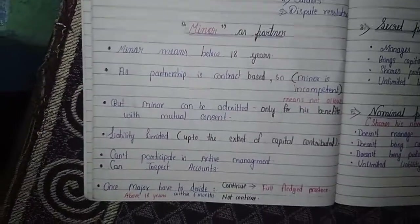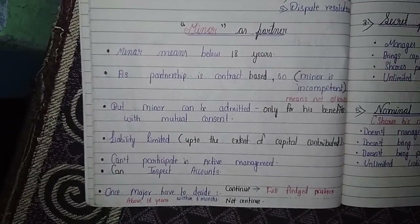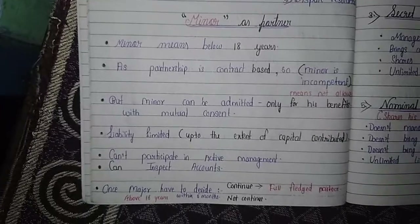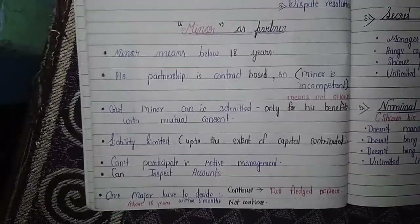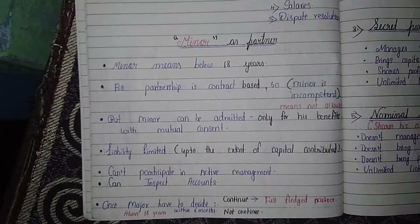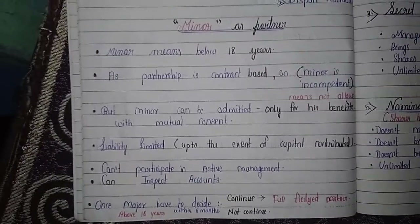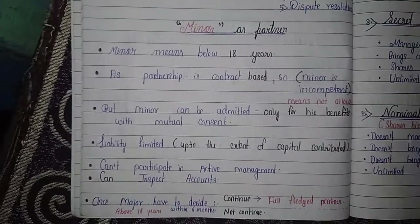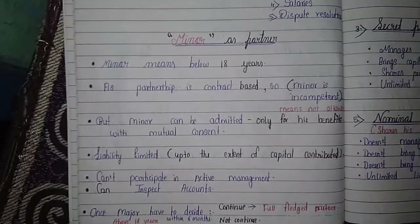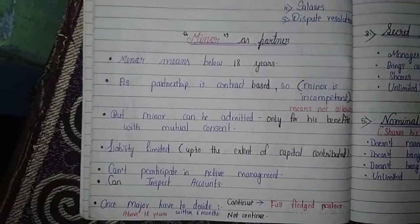The last topic about partnership firms is the minor as partner. Since partnership is contract-based, a minor — someone below 18 years old — is considered incompetent and is not allowed to become a full partner. However, a minor can be admitted to the benefits of partnership only, meaning they can receive a share in profits, with mutual consent of all partners.